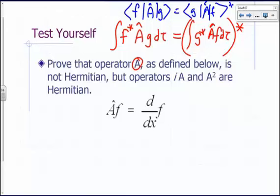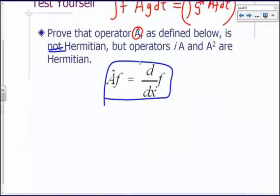So let's prove that operator A as defined here is not Hermitian.